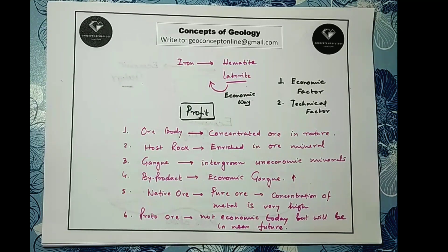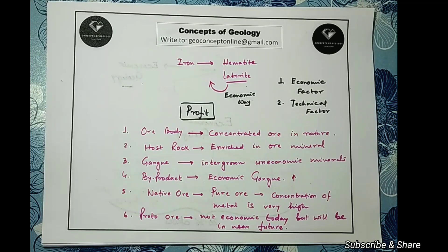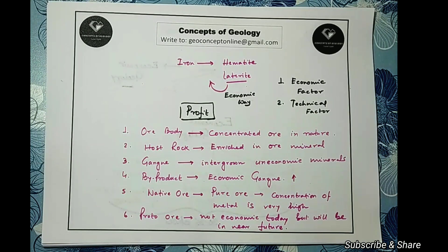That concludes the first class. We have covered the definitions of ore, industrial mineral, host rock, gang, byproduct, native ore, and proto-ore — all of which will help us greatly going forward. In the next class I will discuss the factors that make a mineral deposit potentially viable for mining. Please subscribe and share the channel, and if you have any suggestions or advice please feel free to write to me. Thank you for watching.